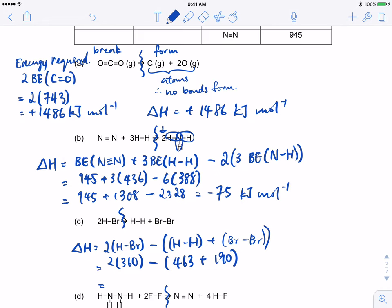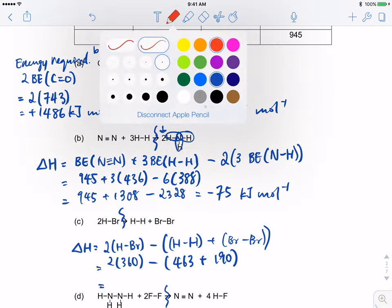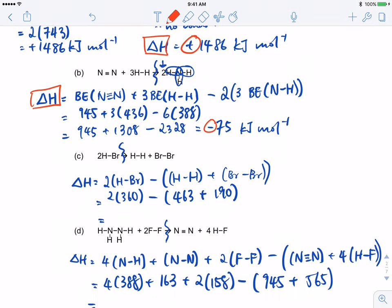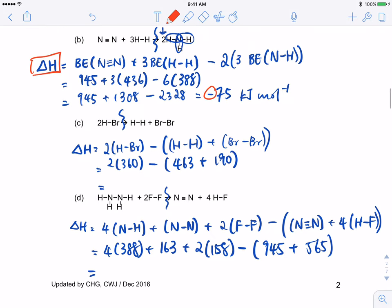You forgot to write the sign. I forgot to mention it just now. Whenever we write delta H, it's important, it's imperative that we write the sign. Because it is always accompanied by the sign, just like in our oxidation state. The sign tells us whether something is exothermic or endothermic. Even if it's greater than zero, you still need to give the positive sign.